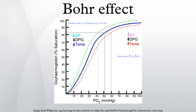When muscles are undergoing strenuous activity, they generate CO2 and lactic acid as products of cellular respiration and lactic acid fermentation. In fact, muscles generate lactic acid so quickly that the pH of the blood passing through the muscles will drop to around 7.2. As lactic acid releases its protons, pH decreases, which causes hemoglobin to release 10% more oxygen.